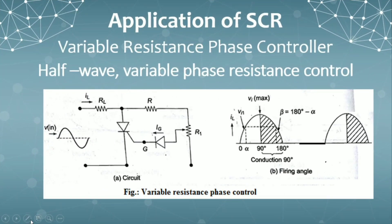The last topic is applications of SCR. Here, one of the important applications is the variable resistance phase controller, also called half wave variable phase resistance control. We are designing a rectifier circuit that can control the phase. A rectifier converts AC to DC — it gives a pulsating output.